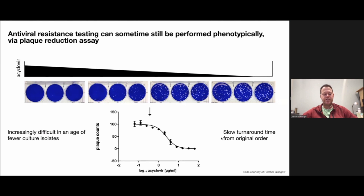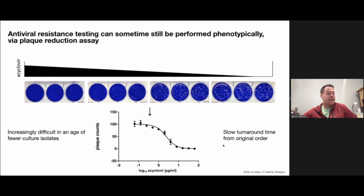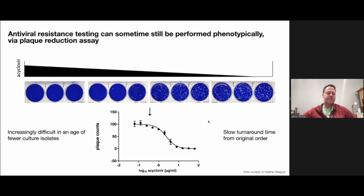When we've looked at our own orders, from the time the clinician orders to the time a result comes back, it's about 40 days. Some of that is on our side: getting the isolate, obtaining the culture isolate, expanding it, sending it out, having it re-expanded or retested, and then completing the phenotypic testing. Still, this is one of the few use cases where phenotypic antiviral testing is actually performed.